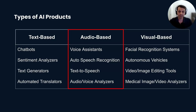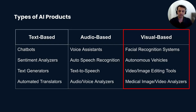Audio-based products also include transcription services that convert speech to text, and audio analytics tools for analyzing call center data. Visual-based AI products work with images and videos — static or dynamic — leveraging computer vision technologies including image recognition, object detection, and segmentation. Examples include facial recognition systems for security, autonomous vehicles using real-time video for navigation, image and video editing tools, and medical diagnostic tools that analyze medical images or videos.